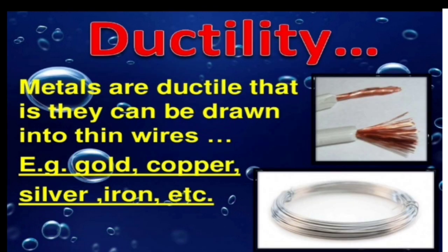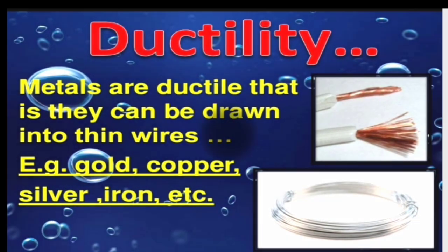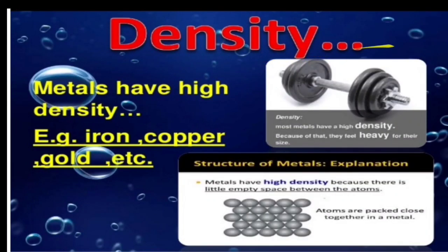The next property is ductility. The meaning of ductility is that metals can be drawn into thin wires. Examples: gold, copper, silver, iron — all metals can be drawn into thin wires. Magnesium wire, copper wire, gold wire, silver wire — anything that can be drawn into thin wires shows the property called ductility.